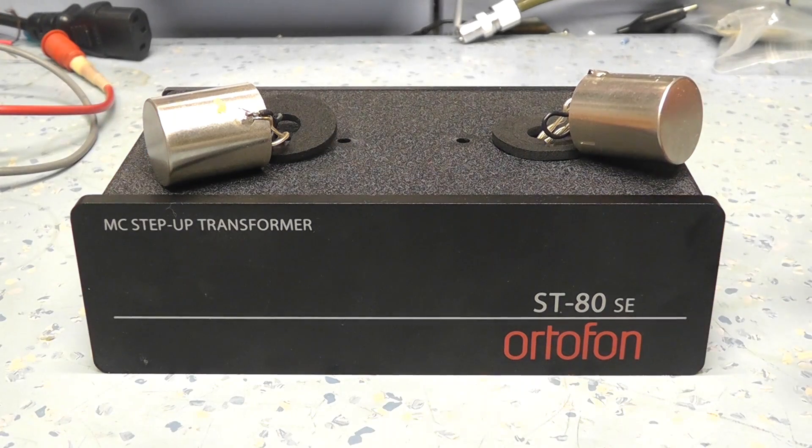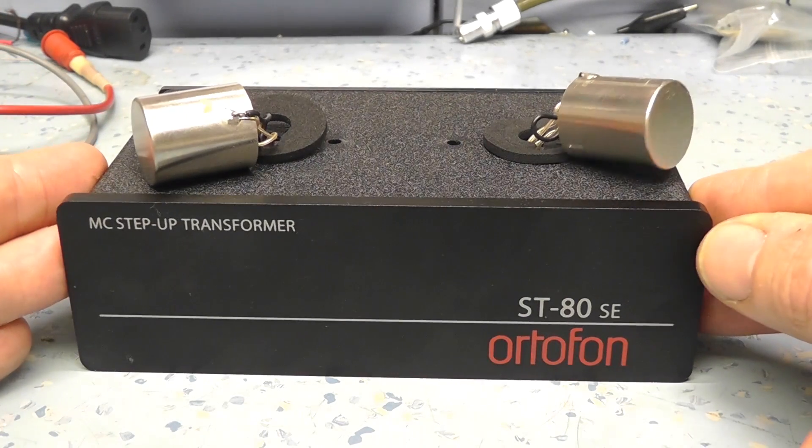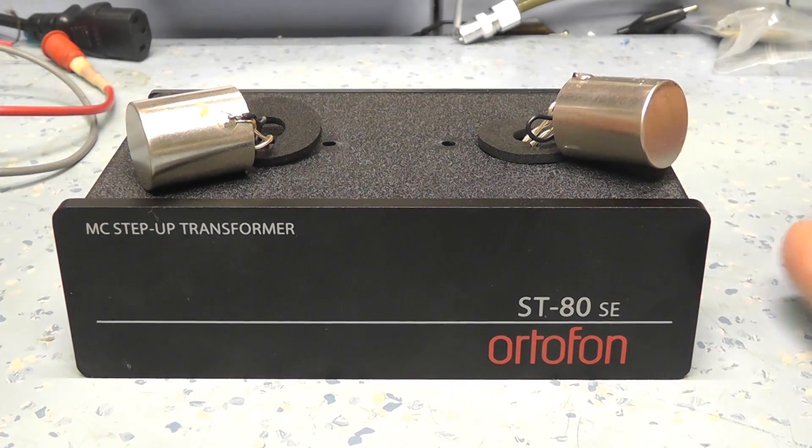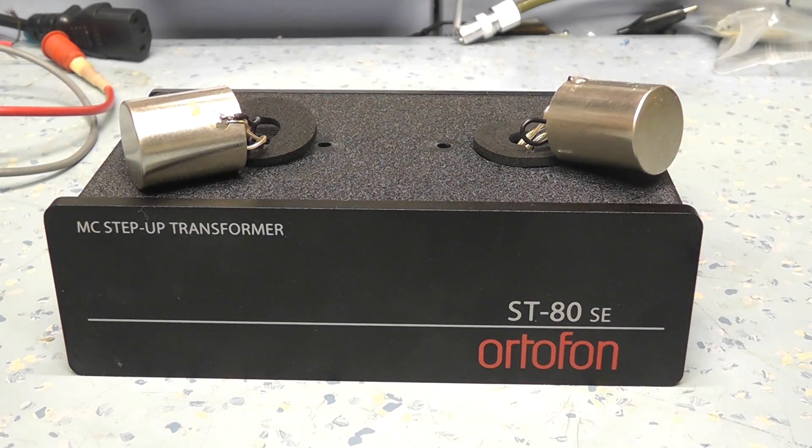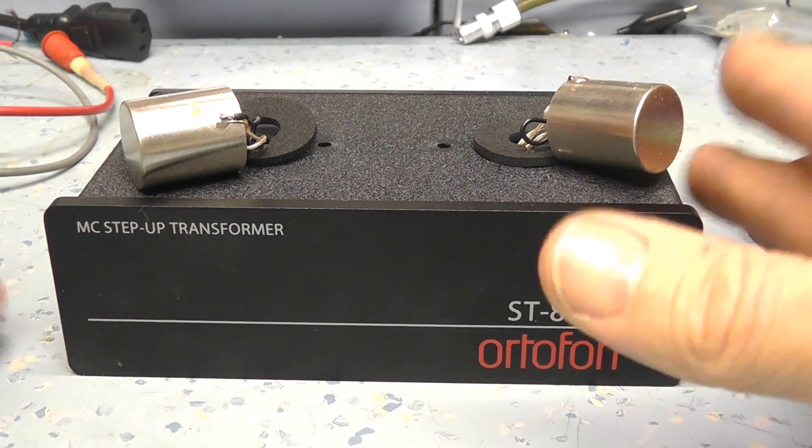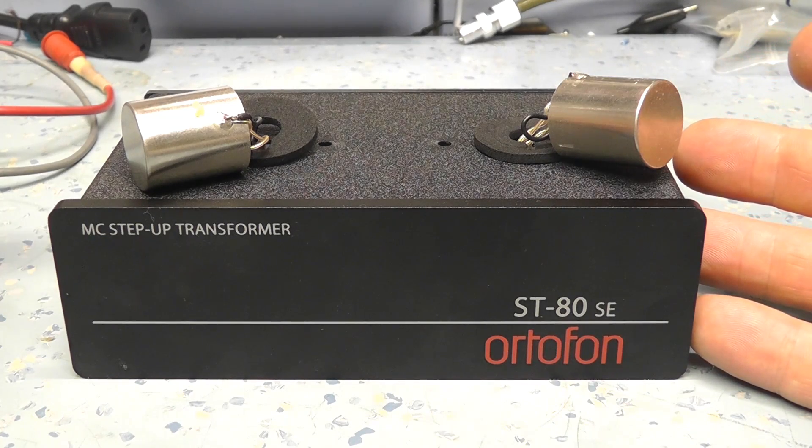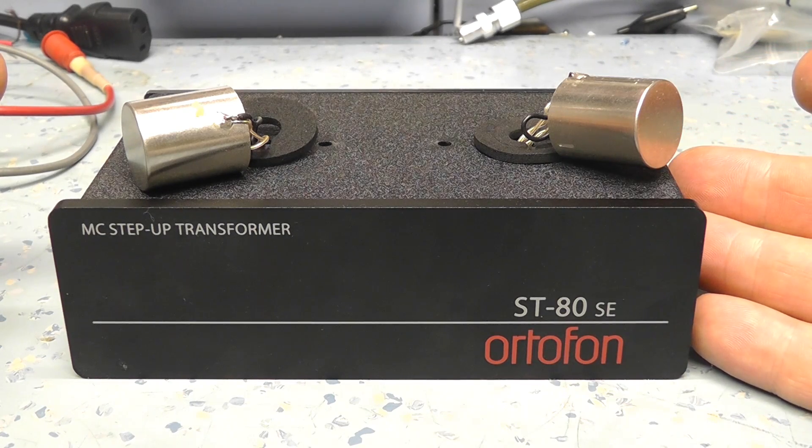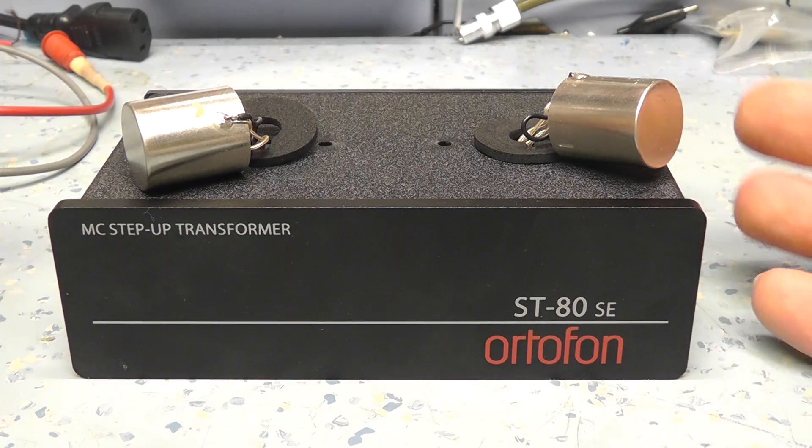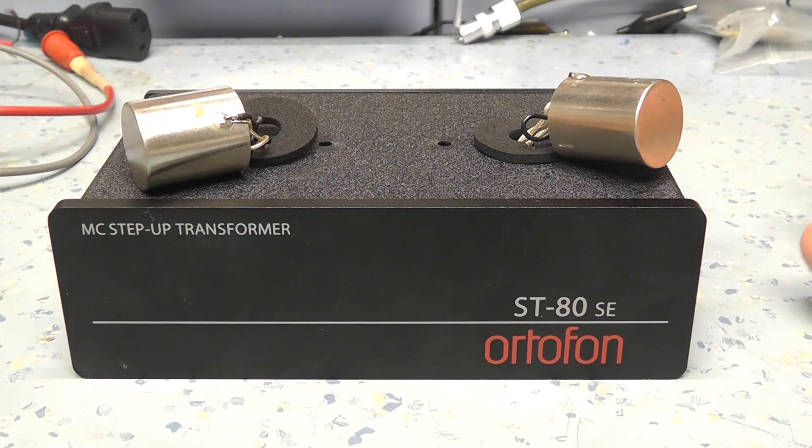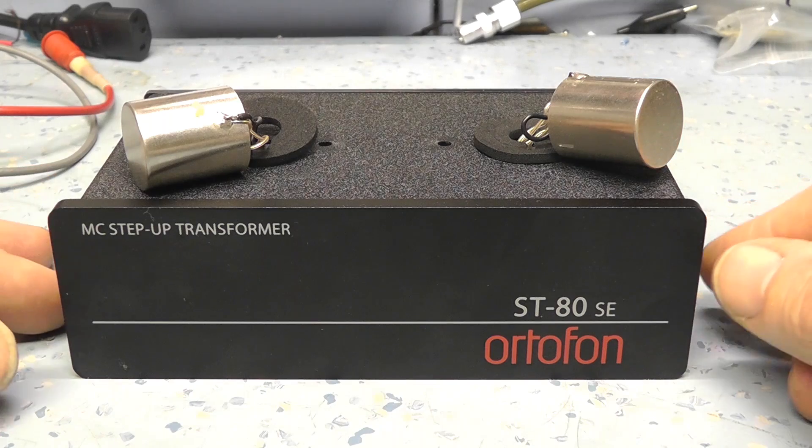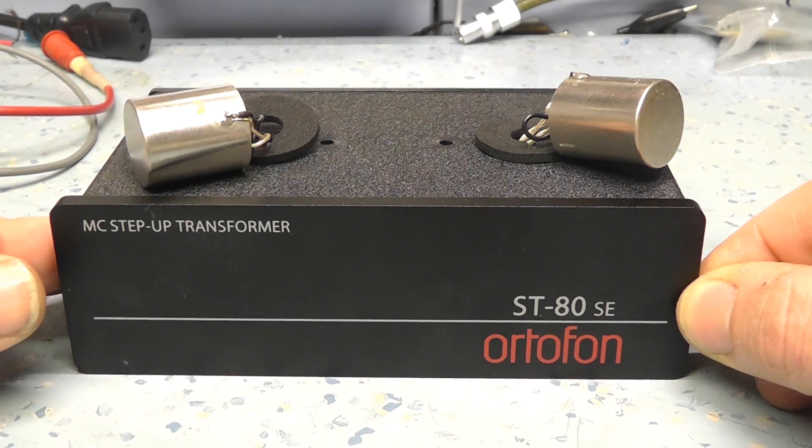So unlike some of the moving coil and moving magnet preamplifiers, this has no RIAA equalization. This is in practice a perfectly flat preamplifier. So if you feed it with a, say, like a 20 ohm, one millivolt input, the output will be 47K, approximately maybe four or five millivolts. I'm not sure what the step-up ratio is.